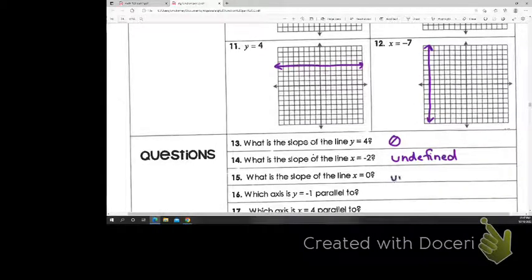If it's only a Y with no X, that slope would be 0. So this is still X equal, so it's still undefined. And so which axis is Y equal negative 1 parallel to? The X. The X axis, yes. So it's horizontal, and of the axes, the X axis is the one that is horizontal. And the axis that X equals 4 is parallel to, then, would be the Y axis.